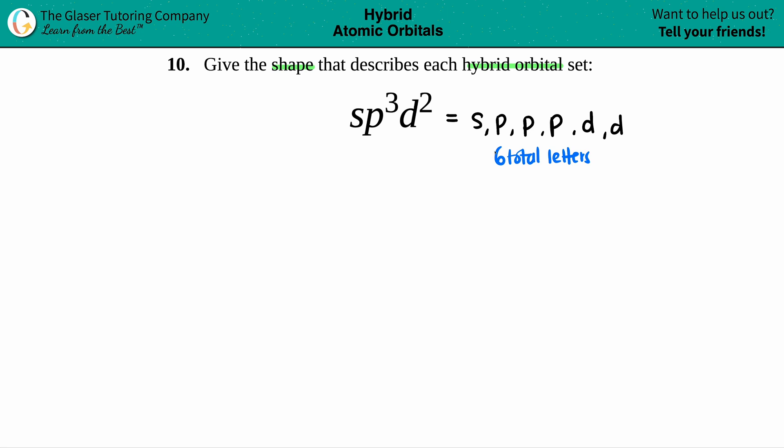So s, p, p, p, d, d, I have six total letters, six total orbitals around a center atom, aka a nucleus. So let's just say that this black dot is any nucleus, it doesn't matter, right? I'll give a real example in a little bit.